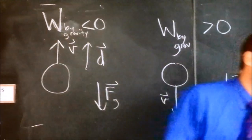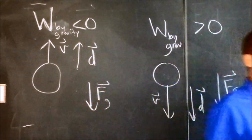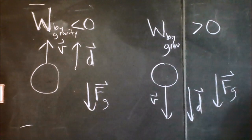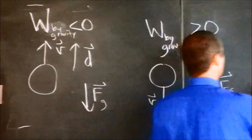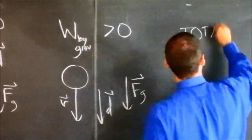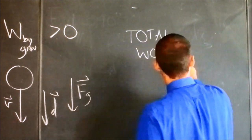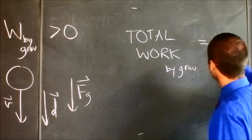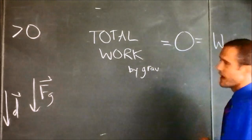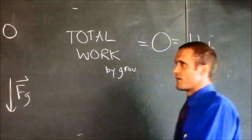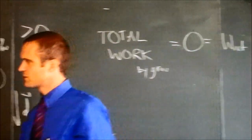So gravity is increasing some kind of energy of the bowling ball on the way down and decreasing some kind of energy of the bowling ball on the way up. We've got negative work being done by gravity on the way up and positive work being done by gravity on the way down. In fact, if I throw it up and catch it at the same point, the total work done by gravity, the net work done by gravity, is zero.